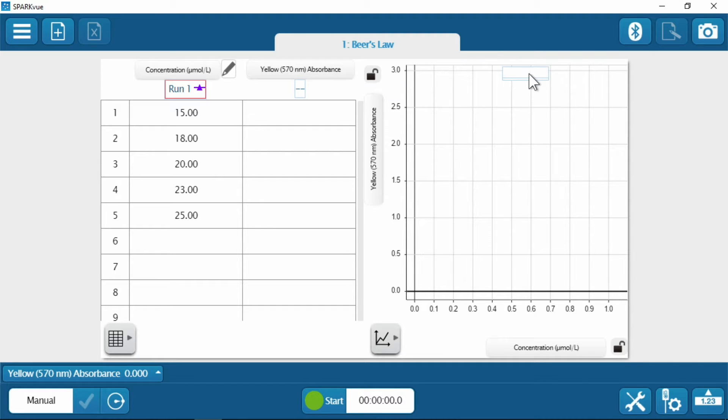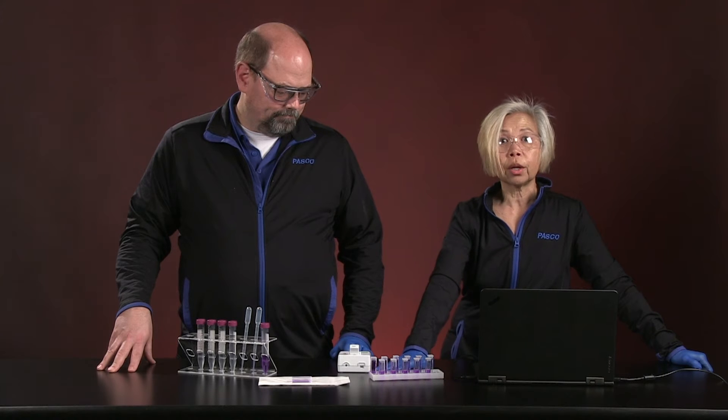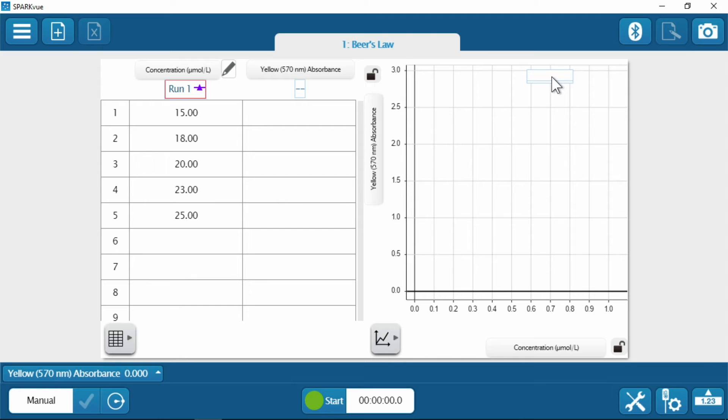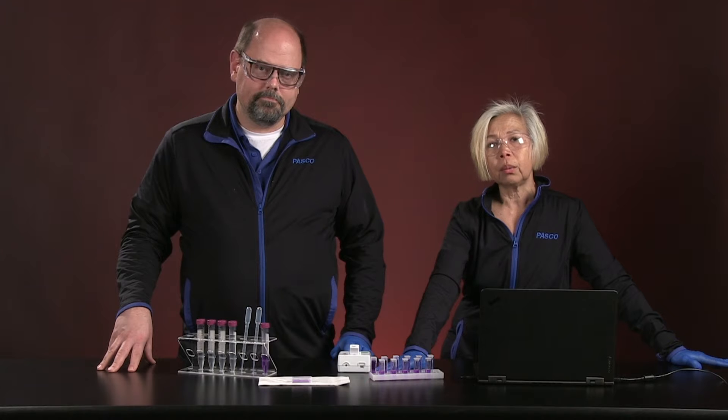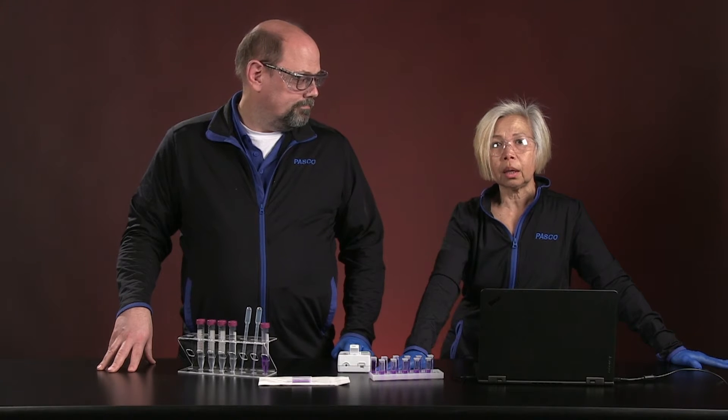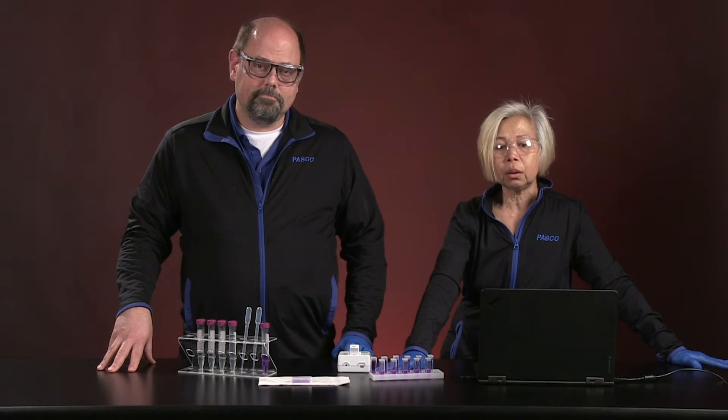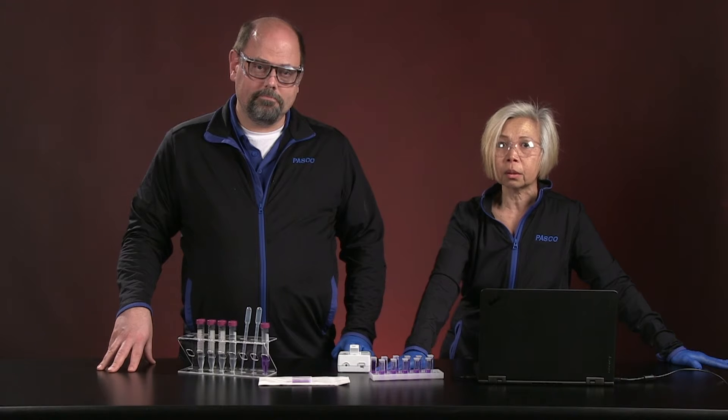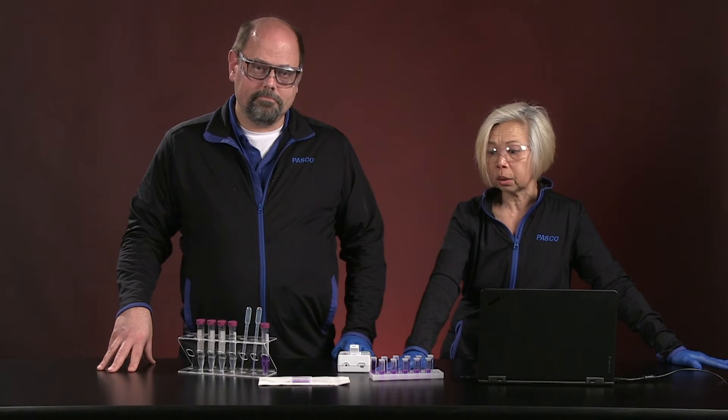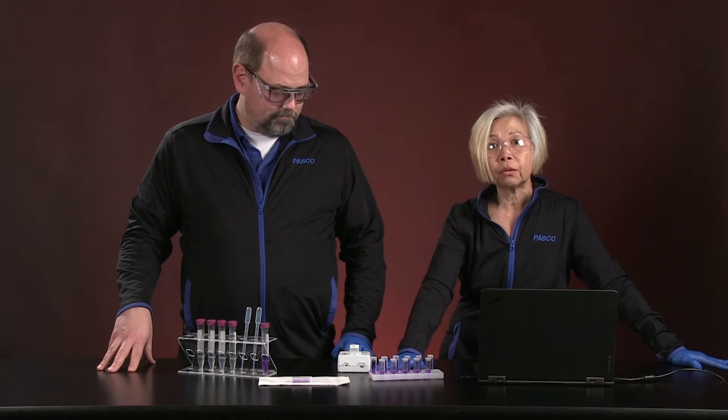I have actually set up a configuration file to do this study. So I have five concentrations of crystal violet, 15, 18, 20, 23, and 25 micromolar. And you're probably asking the question, wait a minute, we are going to be doing kinetics. We are not looking for an unknown. Why are we setting up a Beer's Law calibration curve?